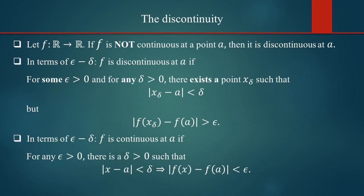Let f be a real valued function. Then f is said to be discontinuous at a point a if it is not continuous at that point. This means a function can be either continuous at a point or discontinuous — there are only two possibilities. You will be aware of the epsilon-delta definition of continuity at a point; taking its negation gives the definition of discontinuity.